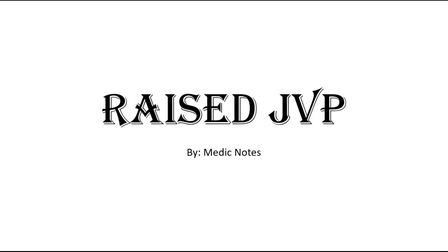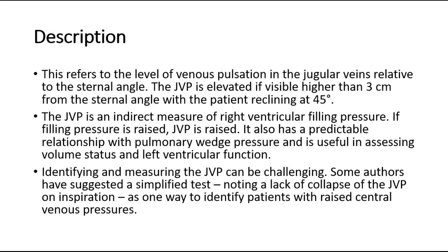Welcome back to another video of Medic Notes. This video is on raised JVP. This refers to the level of venous pulsation in the jugular veins relative to the sternal angle. The JVP is elevated if visible higher than 3 cm from the sternal angle, with the patient reclining at 45 degrees.